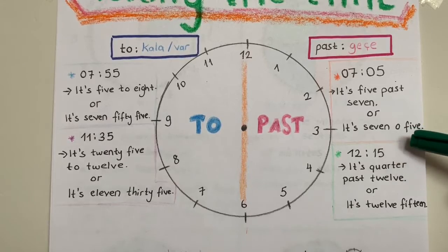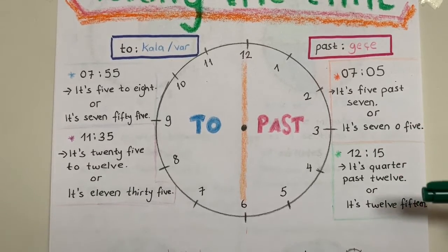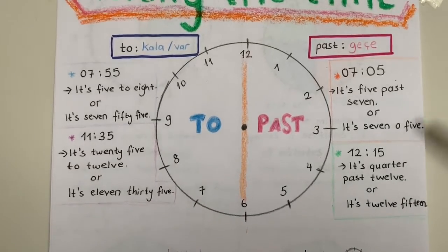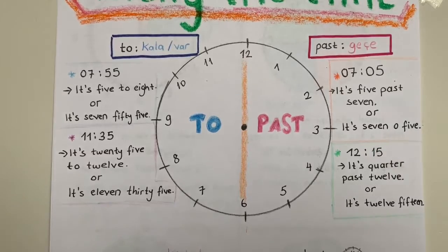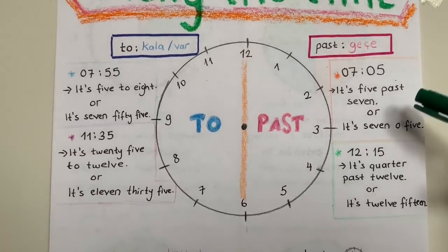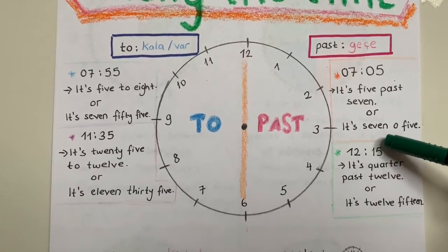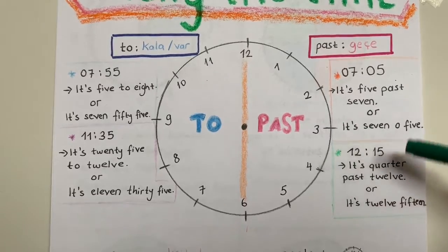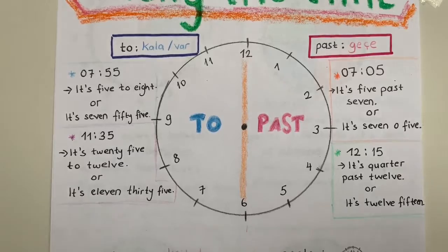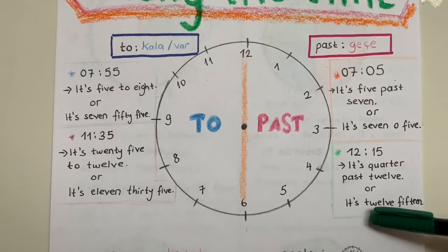Şurada da on ikiyi çeyrek geçiyor diyeceğim: it is quarter past twelve, or it is twelve fifteen. Ne yaptım? Quarter dedim, çünkü çeyrek geçiyor. Geçtiği için de past kullandım. Önce dakikayı söyledim, quarter past. Sonra da saatimi söyledim: twelve. Ya da dijital olarak okumamı isterse, direkt gördüğüm sayıları okuyorum: it is twelve fifteen.